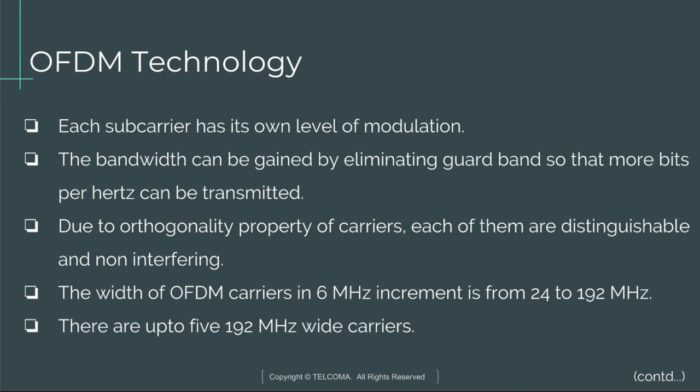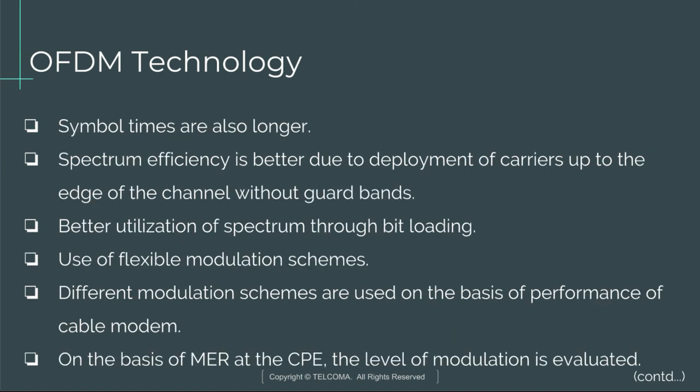There are up to five 192 MHz wide carriers. Symbol times are also longer, and spectral efficiency is better due to deployment of carriers up to the edge of the channel without guardbands. Better spectrum utilization is achieved through bit loading and flexible modulation schemes. Different modulation schemes are used based on the performance of the cable modem, and the level of modulation is evaluated based on the MER at the CPE.